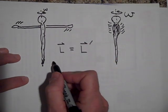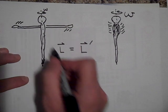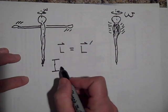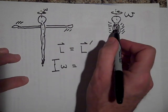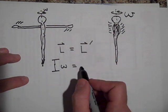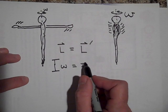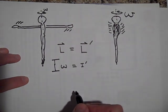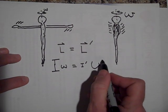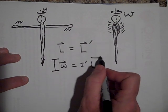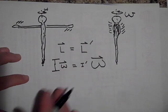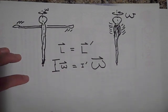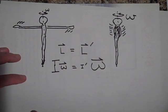And so this big I times the little omega is equal to when the person brings in their arms, they reduce their I. So we actually have an I prime, but their omega goes way up then. Notice how their total angular momentum didn't change though. It stayed the same because there was no net torque on them.